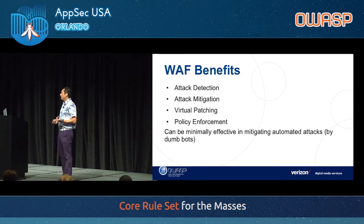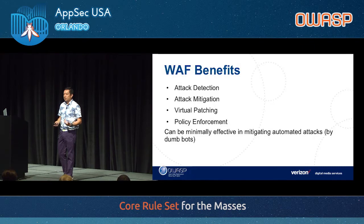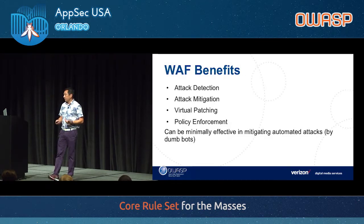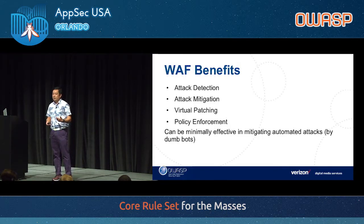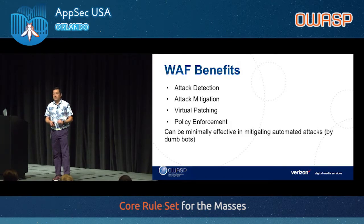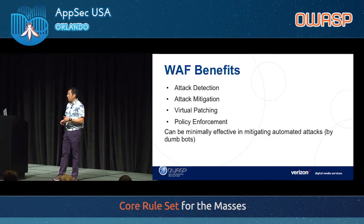Why do you use a WAF? An obvious reason is to detect threats and suspicious traffic — that's what we call detection. Once you can detect what's bad or suspicious, you can take action. That could be a form of mitigation: you could be blocking that traffic, or just monitoring it, or taking downstream actions depending on what the attack is.